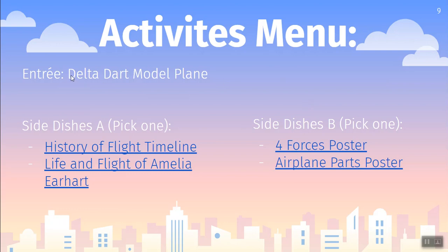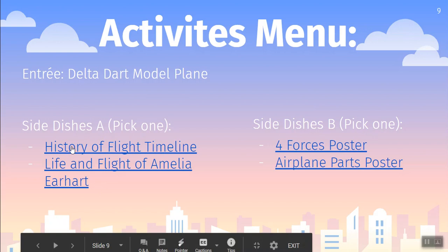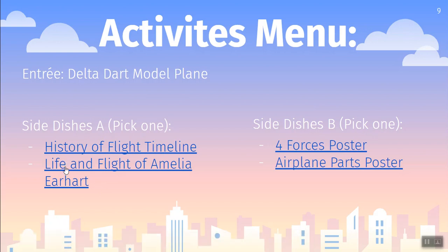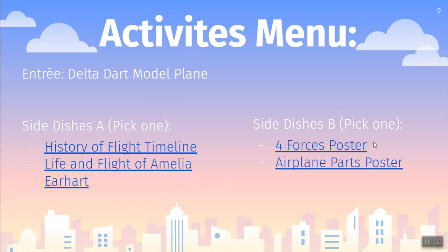Let's take a look at this menu. The entrée, which everyone is doing, is our Delta Dart model plane. If you picked up your activities, you got that clear plastic bag with all of the wood parts — that is our model plane that we get to construct, and that is the big project all of us are doing. From there, you get to pick one side dish A and one side dish B. Side dish A has two options: a general history of flight timeline, or a timeline of the life and flight of Amelia Earhart, who is an incredible female pioneer in aviation.